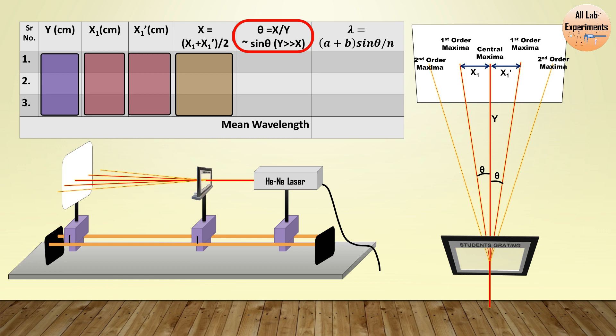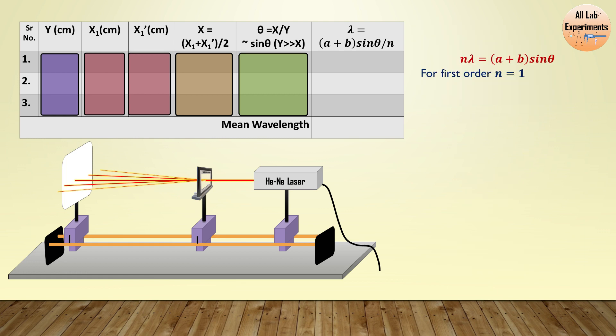So we need not any further calculation if we keep this value of Y high enough. Finally in the last column we have this formula for the wavelength. In this formula we can see some quantities like (a+b)sinθ, which we just calculated in the previous column, and this value n. In this formula the value of n is 1 because we are doing this for the first order spectra. The value of a+b can be calculated